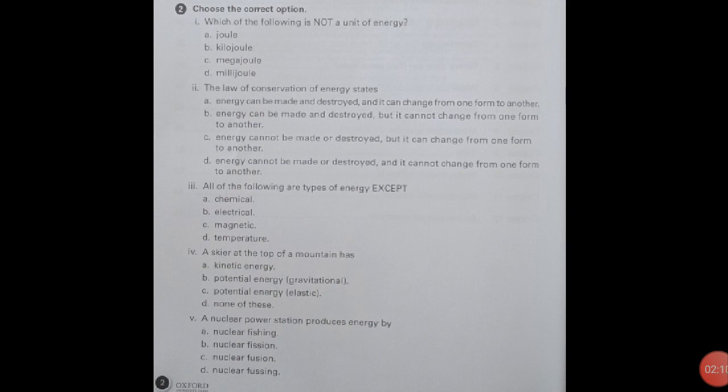Choose the correct option. Which of the following is not a unit of energy? Energy's unit we studied: joule, kilojoule, megajoule. Here option D is correct, which is milliliter. Milliliter is volume's unit. So here milliliter is incorrect. D option is incorrect. The unit of energy is joule, kilojoule and megajoule.